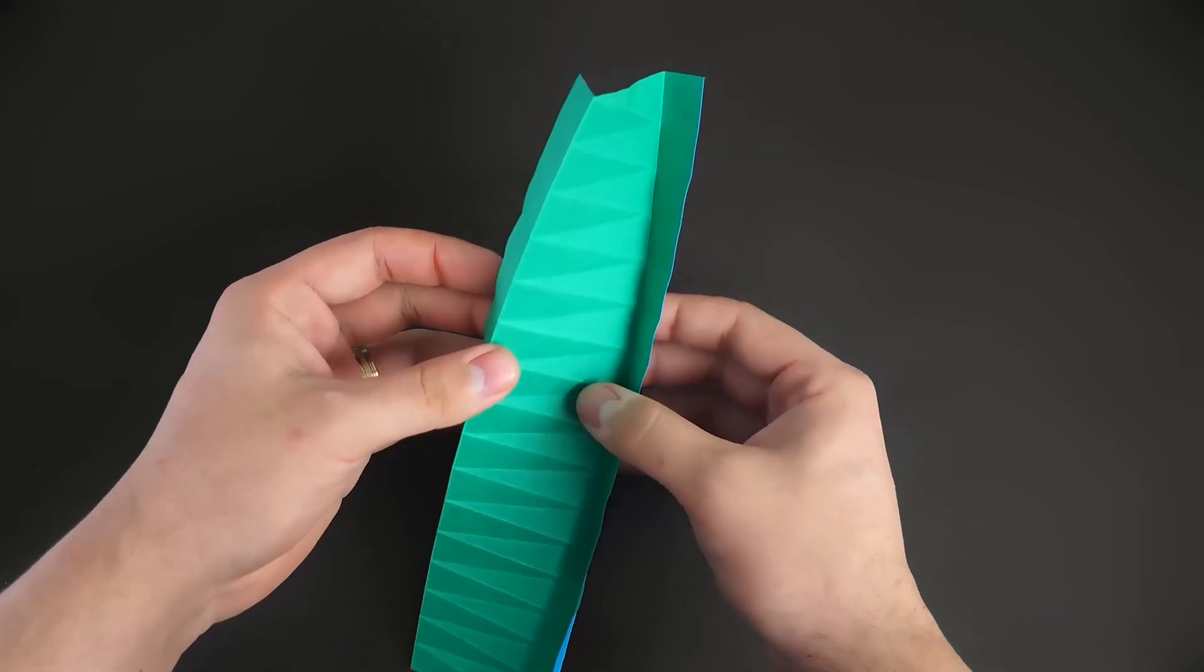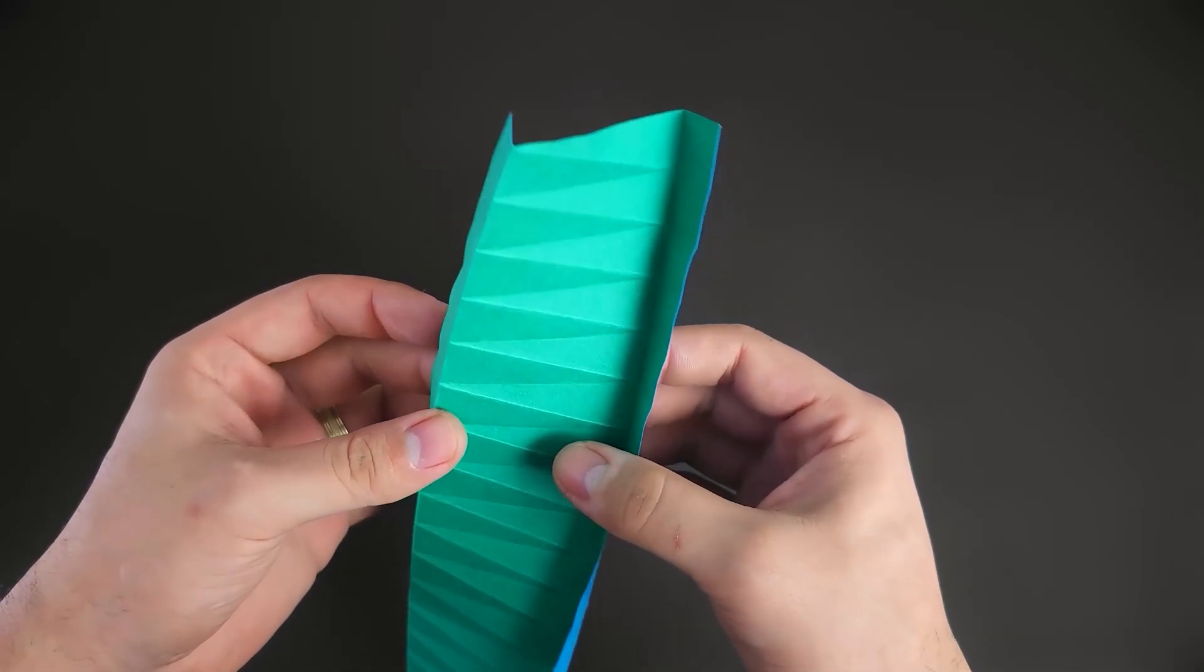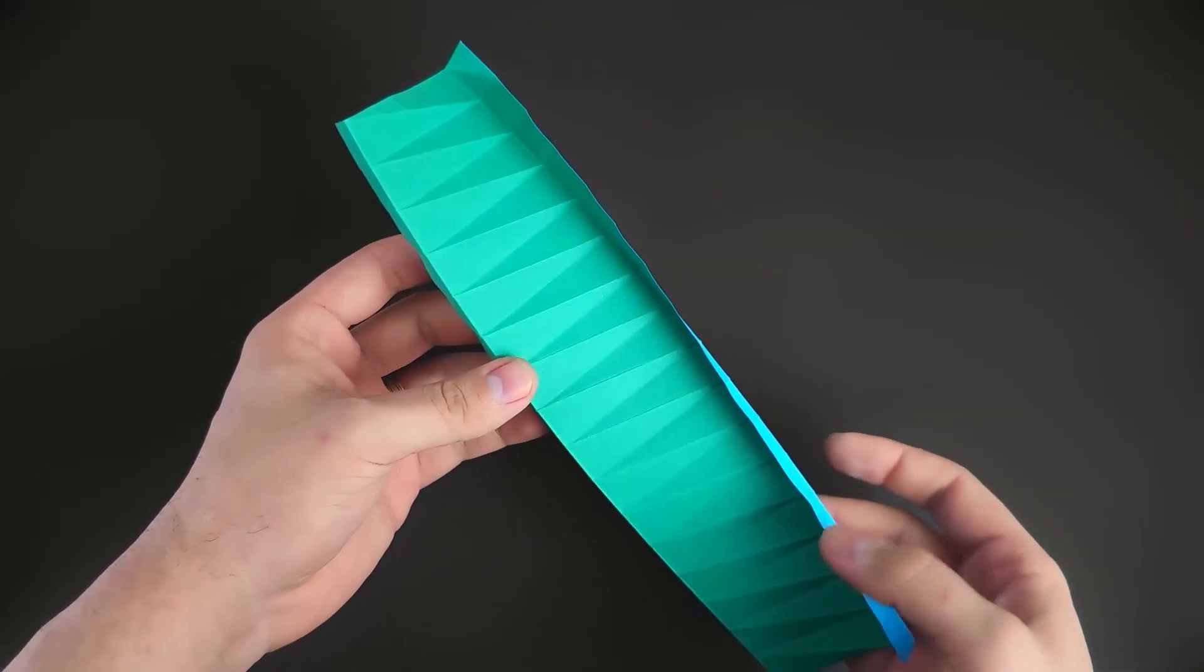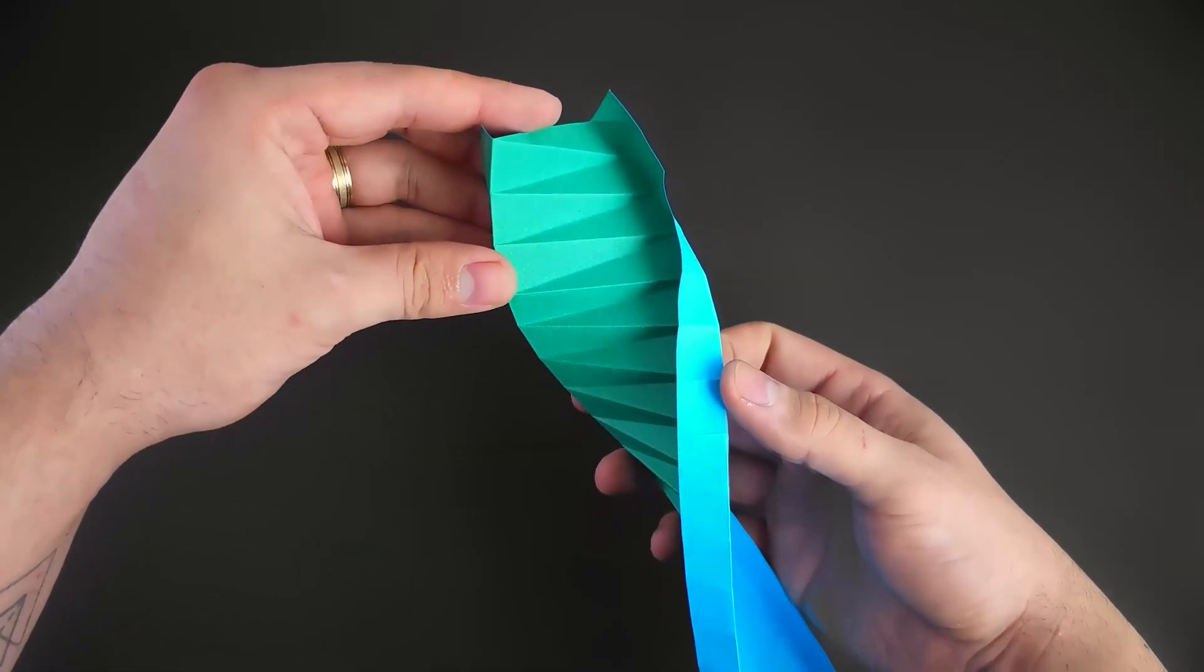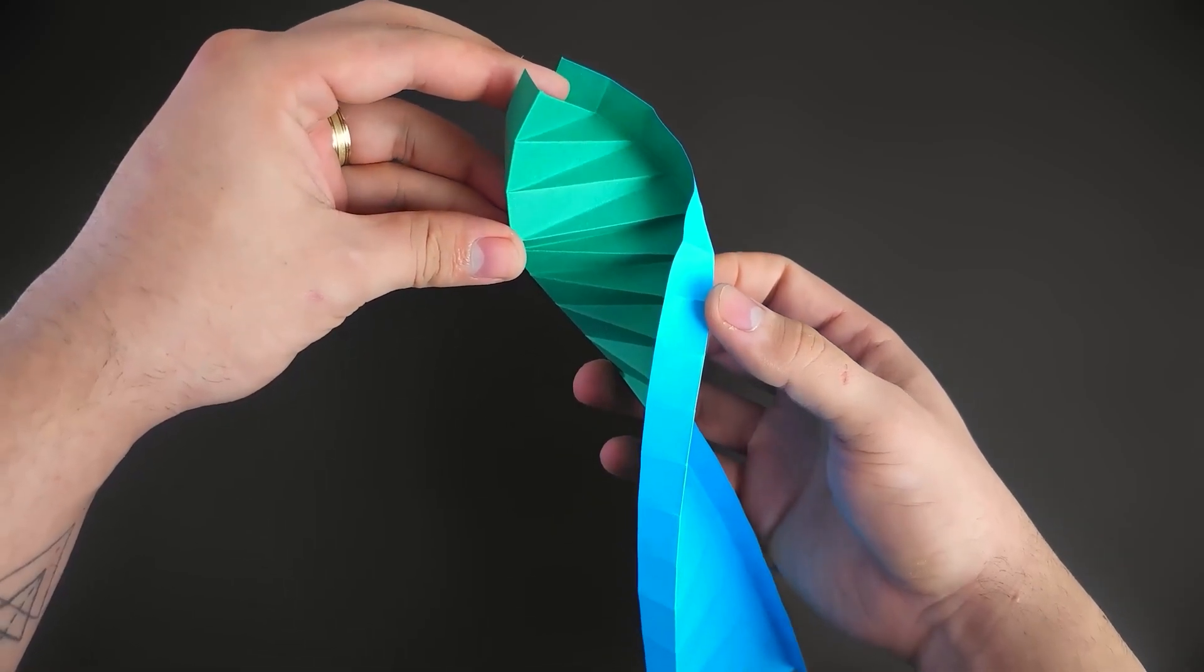With all those creases in place, the next step is almost automatic. We'll simply use those crease lines to fold one layer over the other, creating a spiral.